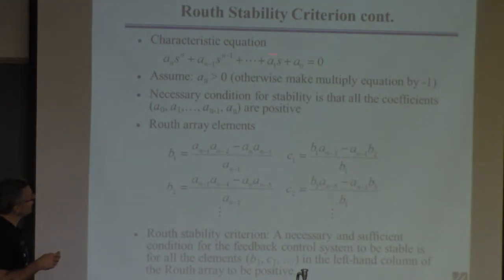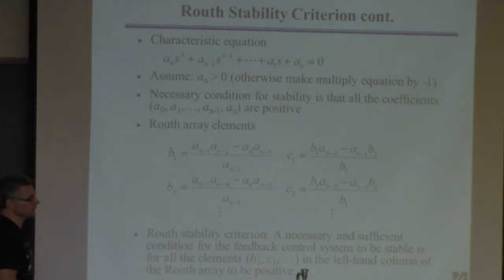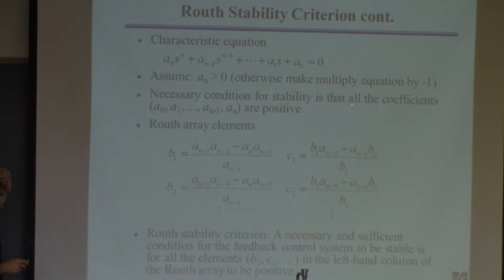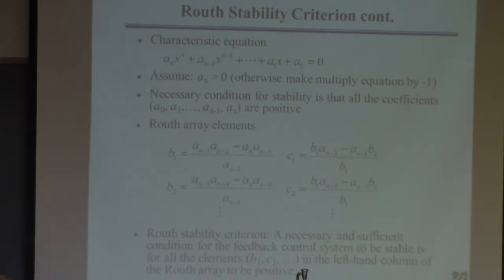By using this polynomial, we don't want to actually compute the root. So the first thing we do is assume this thing is positive. It's not really an assumption, because if this number is negative, you just multiply across the equation by negative 1 — make a_n positive. So once you make a_n positive, you look at these coefficients. A necessary condition for stability is all these things are positive.